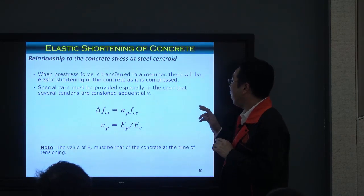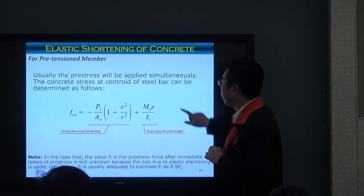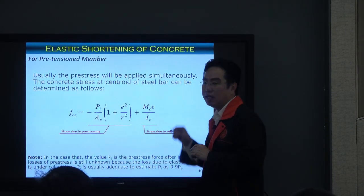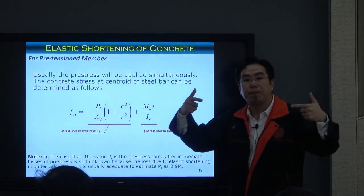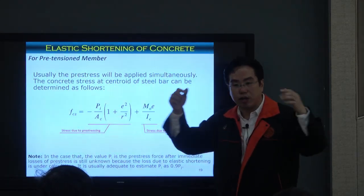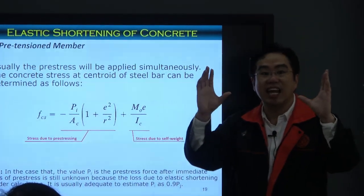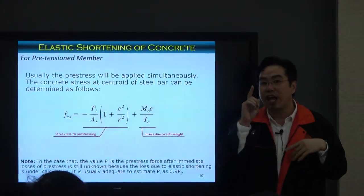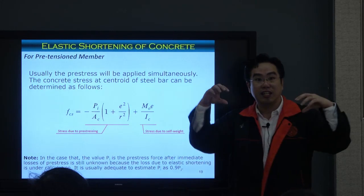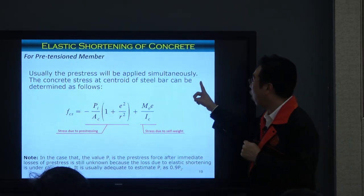There are some cautions to consider. For pre-tension members with constant eccentricity, you need to consider the self-weight as well. When you release the force, concrete shortens due to pre-stress, but you also need to consider whether there is any external load — in this case, moment due to self-weight — applied at that same moment. The shortening will be compensated by this deformation as well, and this normally occurs in the case of pre-tension members where you cast, cure, then release the tendon.